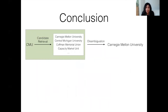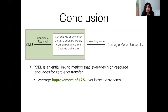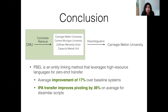With that, we conclude the second part of the talk. In this part, we discussed a candidate retrieval method for low-resource settings called pivot-based entity linking. The pivot-based entity linking method leverages high-resource language data for zero-shot transfer, demonstrating significant improvements both with transferring through the original script and through IPA representations. In the next part of the talk, we examine the errors made by the pivoting method and identify modeling and data modifications that further improve candidate retrieval for low-resource languages.